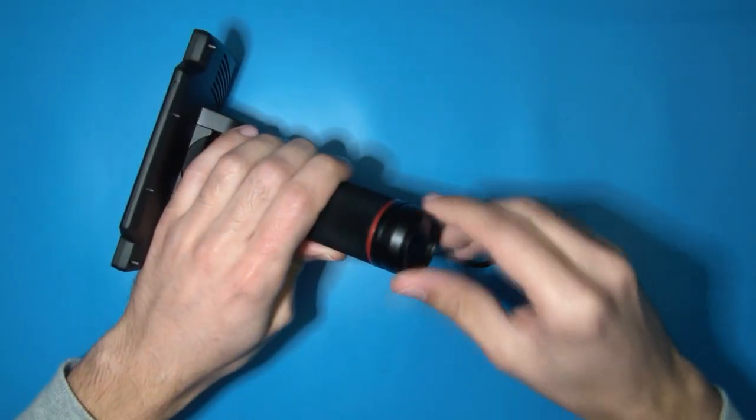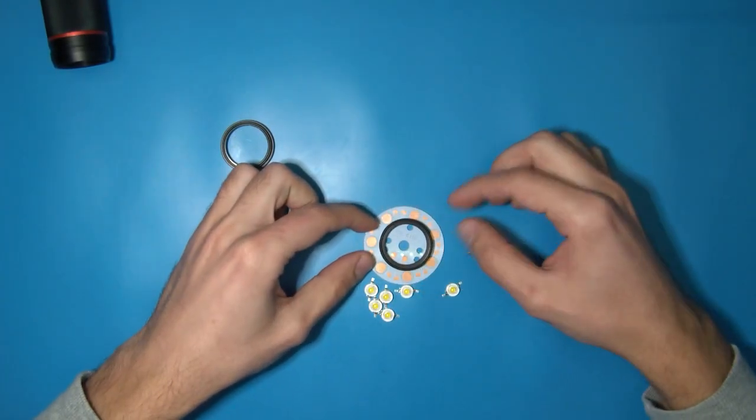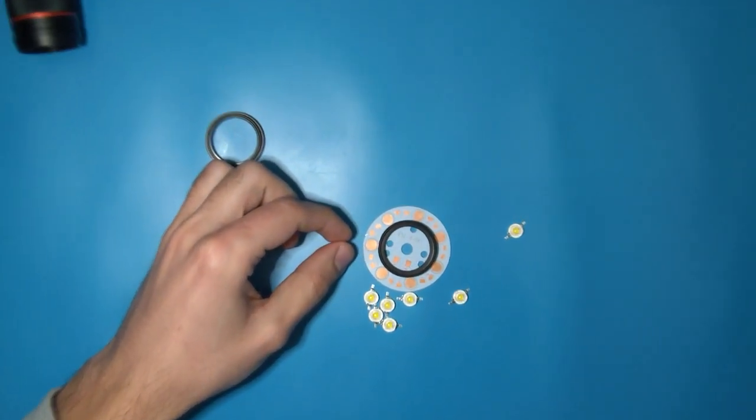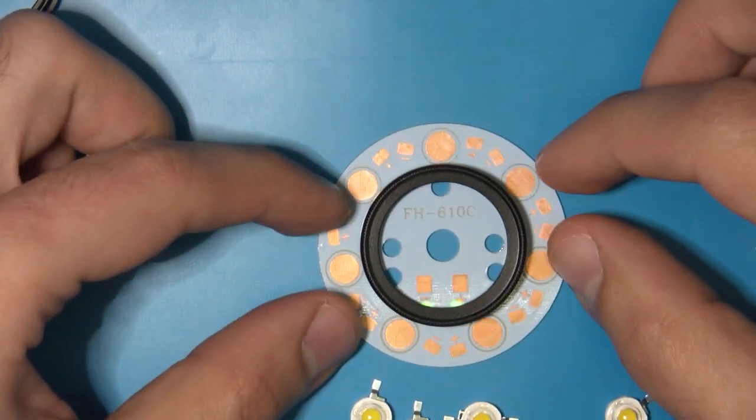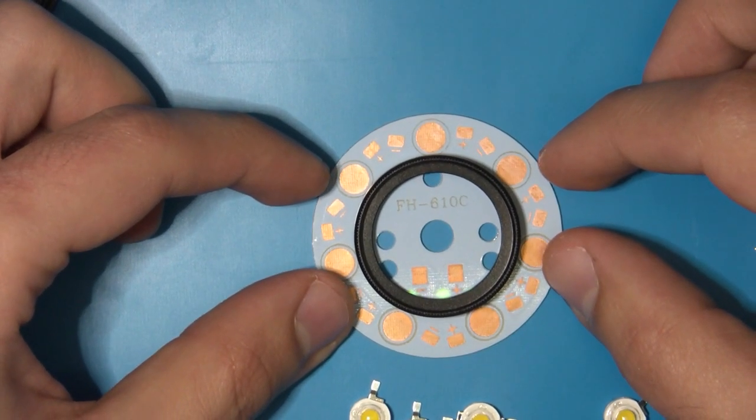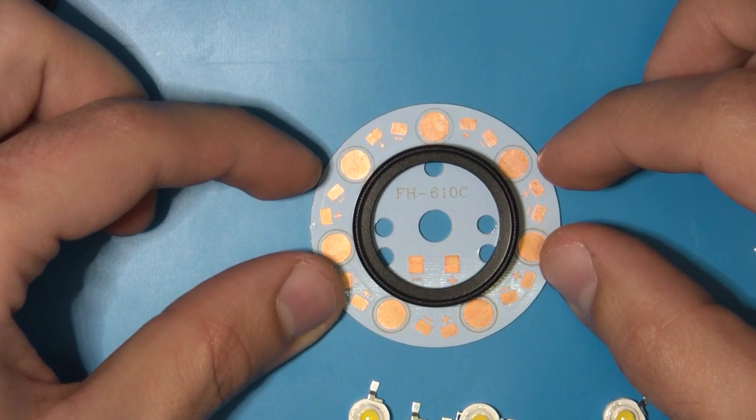I started by removing the lenses, which are identical on both models. I then put them on top of an LED aluminum substrate PCB and although it is a tight fit, I realized that if I soldered the LEDs all the way to the edge, I could fit the lens in the middle.